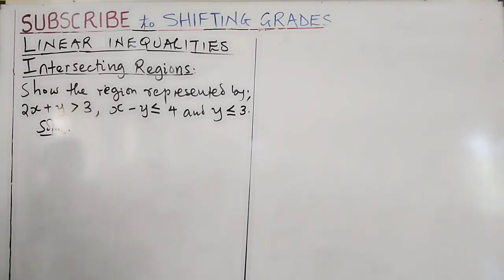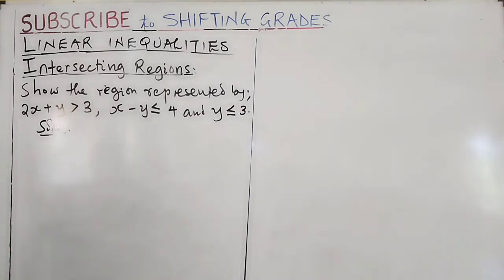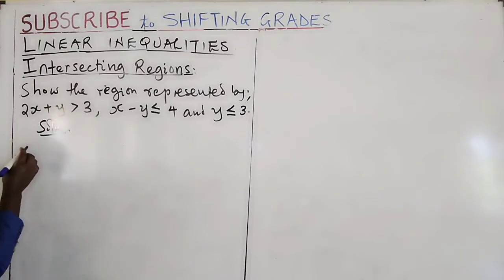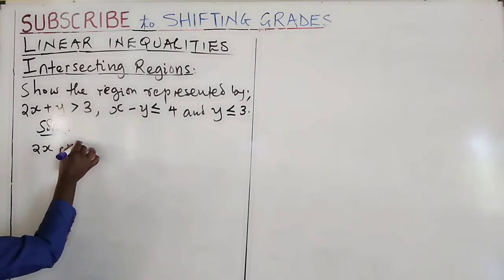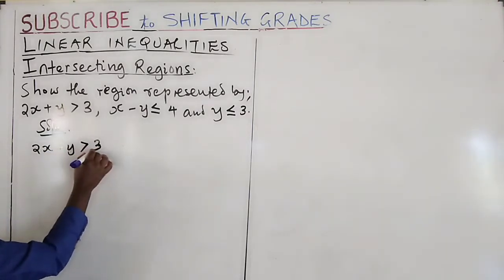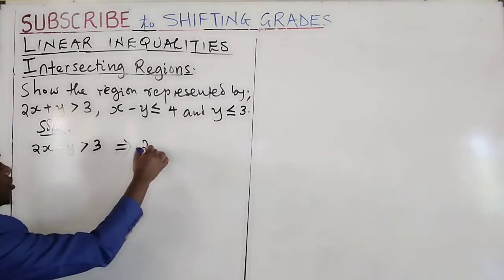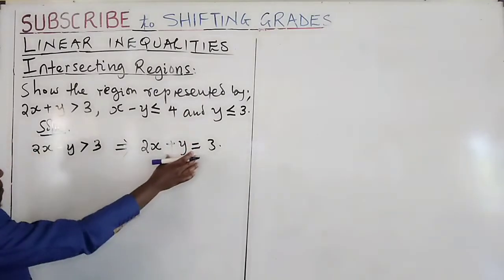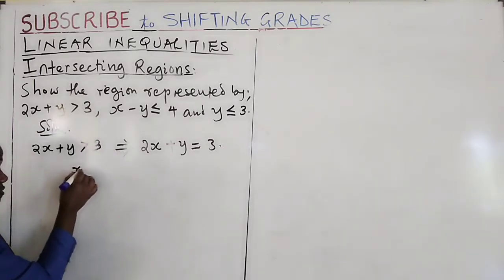When you see an inequality, you first identify the respective equation of the line which will represent the given inequality. Therefore for the first inequality, instead of the inequality 2x plus y greater than 3, we will draw the line 2x plus y equal to 3. We then come up with a table of x and y values for this equation.